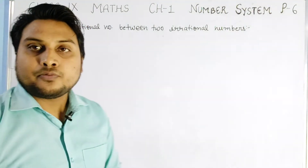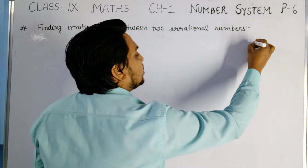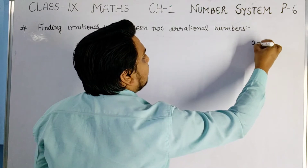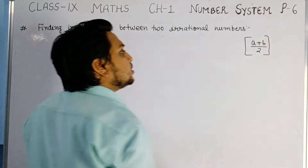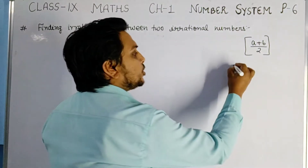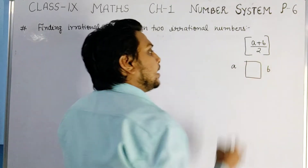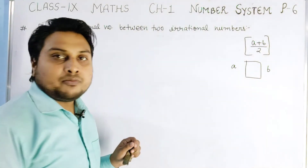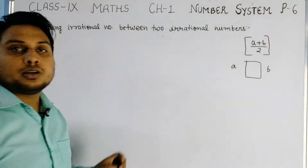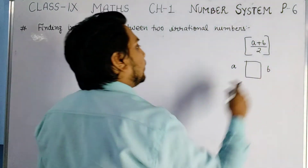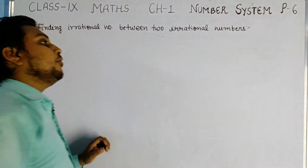As we studied for rational numbers, there is a formula to find a rational number between two rational numbers: (a + b) / 2. If a and b are rational numbers and we have to find a rational number between a and b, we apply this formula to get one rational number between a and b.